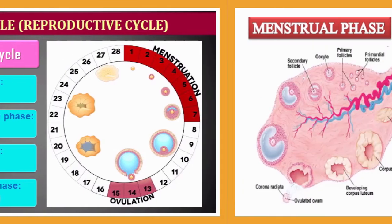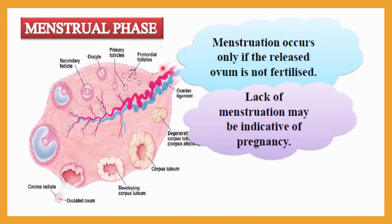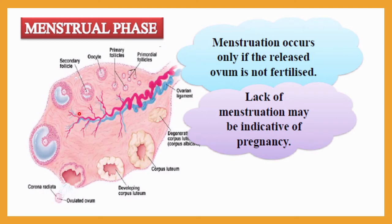Inside the ovary, when the egg cell is produced, a primary follicle forms, then a secondary follicle, which matures and converts into a Graafian follicle. The Graafian follicle is ready to release the egg cell — a process called ovulation. After releasing the egg, the follicle converts into the corpus luteum, which eventually degenerates.